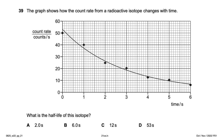The graph shows how the count rate from a radioactive isotope changes with time. What is the half-life? Taking a count rate of 50 at time 0.2 s, it drops to 25 at time 2 s. Half-life = 2 − 0.2 = 1.8 seconds. Option A is the right answer, closest to 1.8 s. For accuracy, averaging multiple measurements would give a closer value.